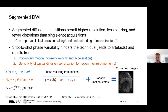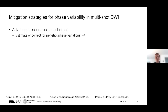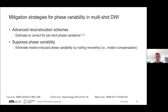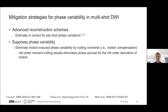Across shots of an interleaved acquisition, we would have variable motion states and therefore different values of phase accrual, ultimately resulting in corrupted images. This shot-to-shot phase variability is typically handled on the reconstruction side, where per-shot phase variations are estimated and corrected for. However, we are also interested in suppressing the phase variability directly at the source — using diffusion gradient waveforms with null moments, which would reduce the phase variability. This process we can call motion compensation, meaning nulling through the N-th order moments of the diffusion gradients would eliminate phase accrual for up to the N-th order derivative of motion.